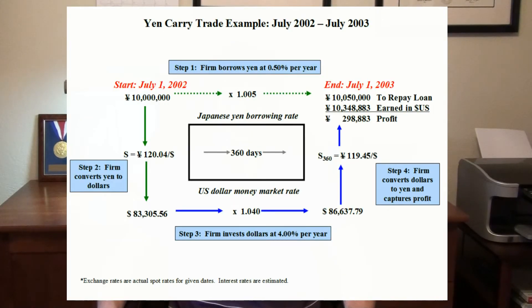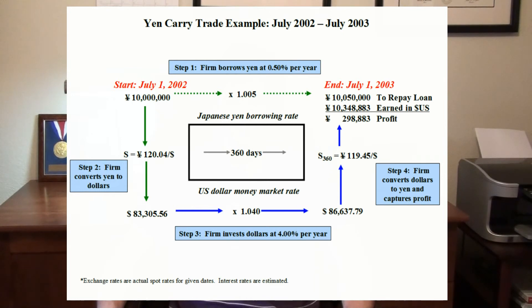This example shows a complete carry trade with actual figures from 2002 and 2003. A firm borrows 10 million yen, converts it to dollars, and invests the dollars at a 4% annual return. At the end of the trade in July 2003, the dollar-denominated investment is converted back to yen at the market exchange rate. The firm makes a profit of almost 300,000 yen. Had the firm only invested in yen, it would have made 50,000 yen. If the firm had simply borrowed dollars, it would have made less money because its interest rate on the loan would have been much closer to the money market rate of 4%, versus the rate on Japanese yen of 0.5%. Because the firm borrows money it does not previously have, it creates profits synthetically.